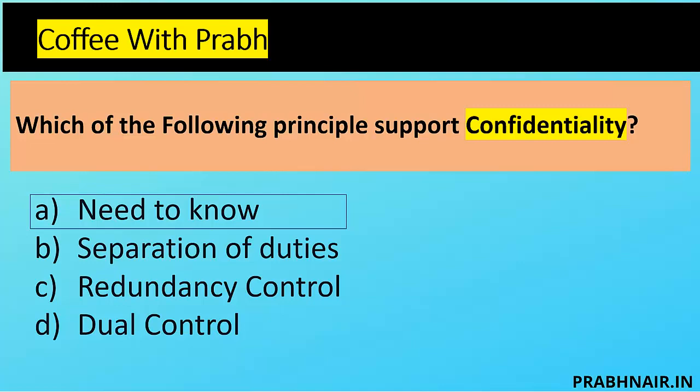The only option left is need-to-know, which is the principle by which we achieve confidentiality. A best example is when you share a Google Drive link with three people — if a fourth person tries to access the link, they get an error that the drive is restricted, and you receive a notification. Until you review their need, you don't grant access. Need-to-know, principle of least privilege, encryption, and access control are all principles supporting confidentiality.